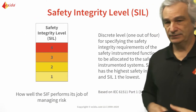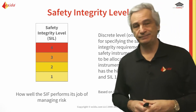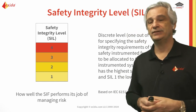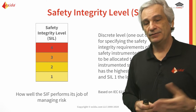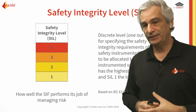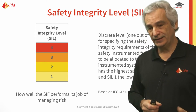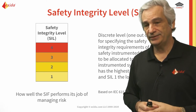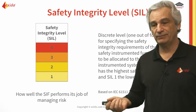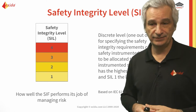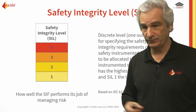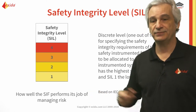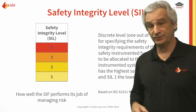So what are the safety integrity levels? There are four safety integrity levels defined: SIL 1 being the lowest, SIL 4 being the highest. They're typically an order of magnitude apart. SIL 1 would be anywhere between 1 to 100, SIL 2 is 101 to 1,000, SIL 3 is 1,001 to 10,000, and SIL 4 is above that.